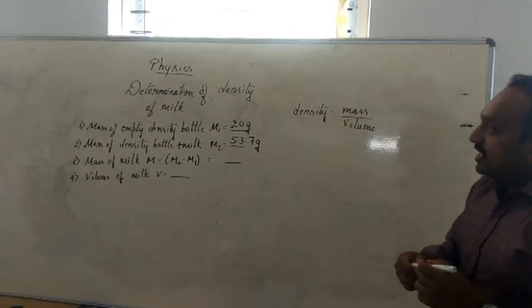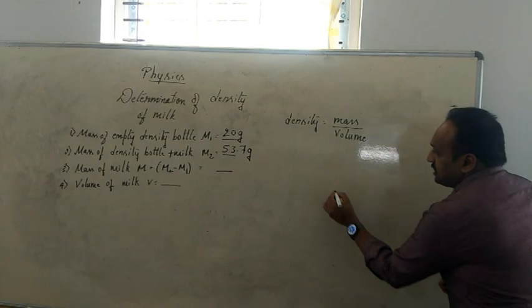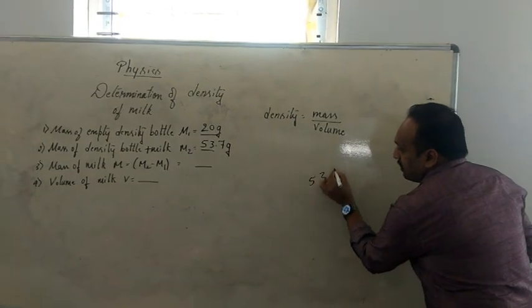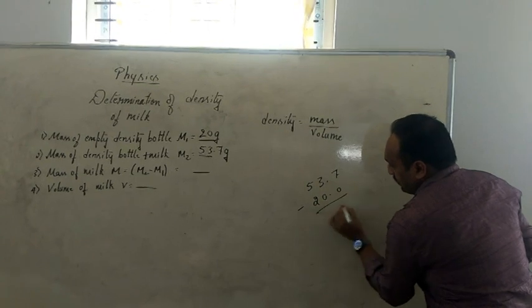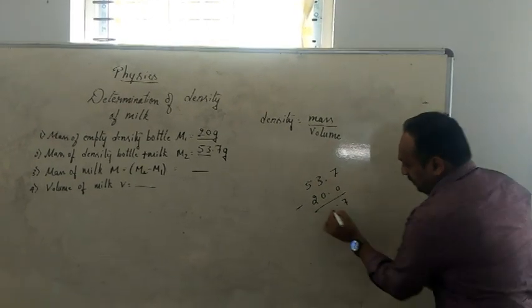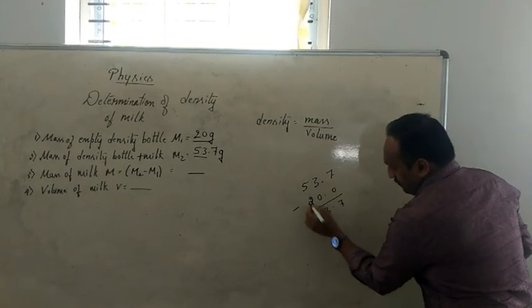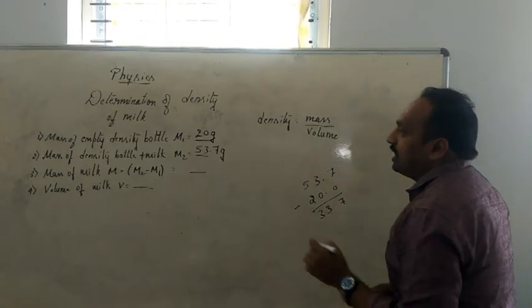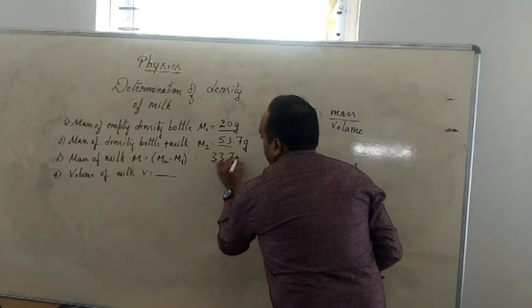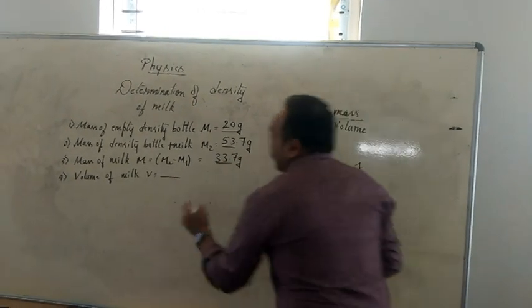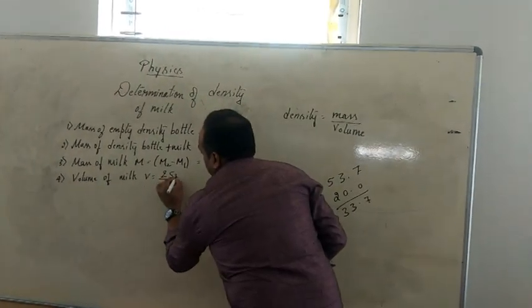How can I find it? We need to subtract these two values. That is 53.7 minus 20, which equals 33.7. So the mass of the milk is 33.7 gram and volume of milk is 25 ml.